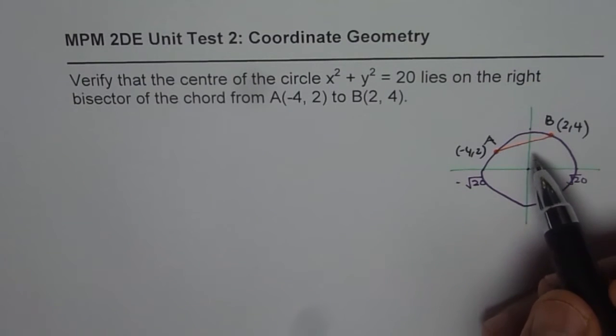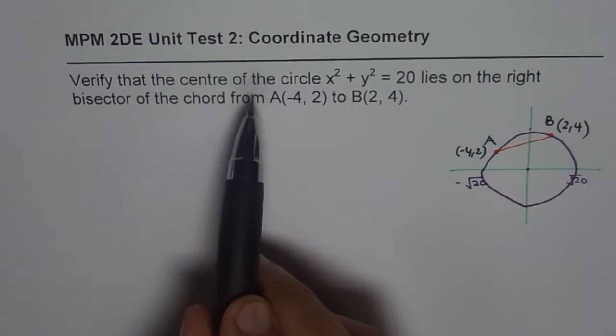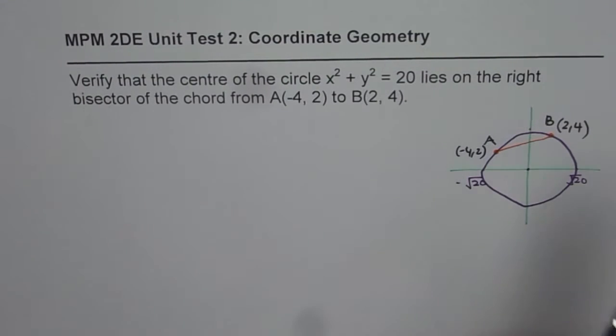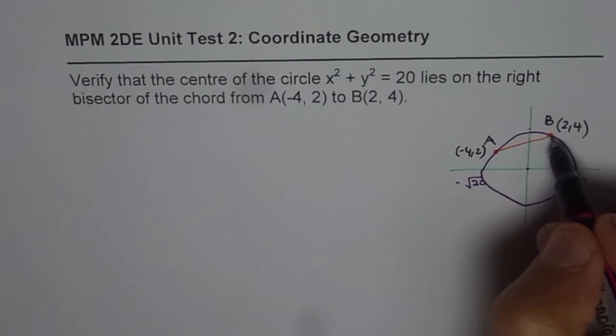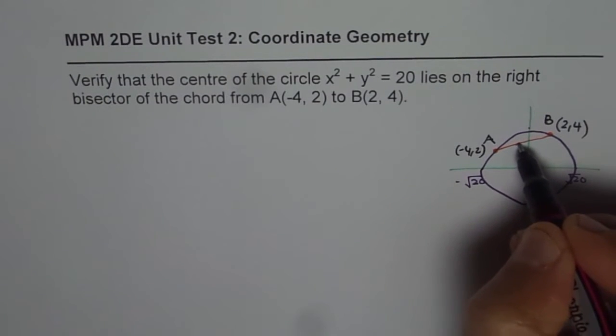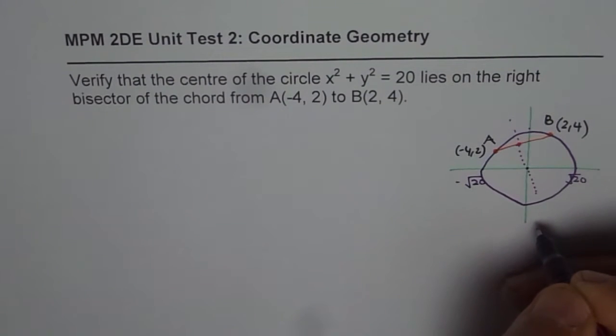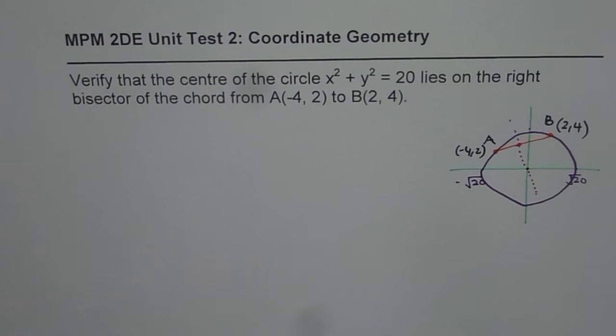Now we need to verify that the center of the circle lies on the right bisector of the chord. So to do that, what should we do? Right bisector of the chord really means we have to find the midpoint. Once we find the midpoint, then the right bisector will go like this, and we have to verify that it indeed goes through the origin. That is what the question is, correct.